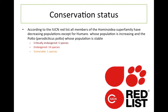The conservation status is something I thought I'd put in for reference. According to the IUCN red list, all members of the hominidae superfamily have decreasing populations — obviously except humans, whose population is increasing, and the potto, whose population is stable. We've got five critically endangered, 14 endangered, and one vulnerable. That's a bit worrying — we're beginning to lose our taxonomic cousins' diversity. If you're interested in how phylogenetics contributes to conservation status, do take the biodiversity module where we go into this in a lot more detail.